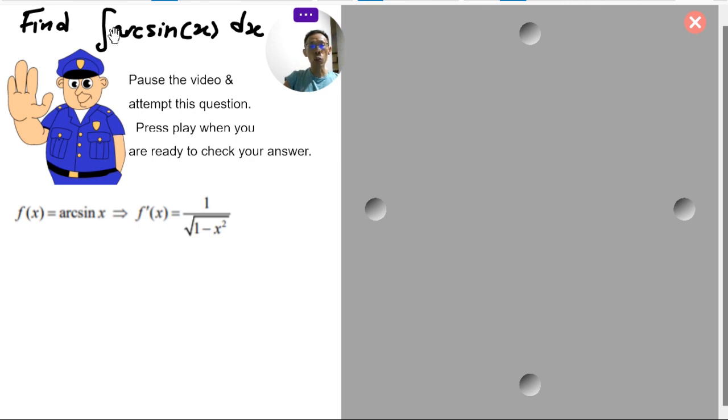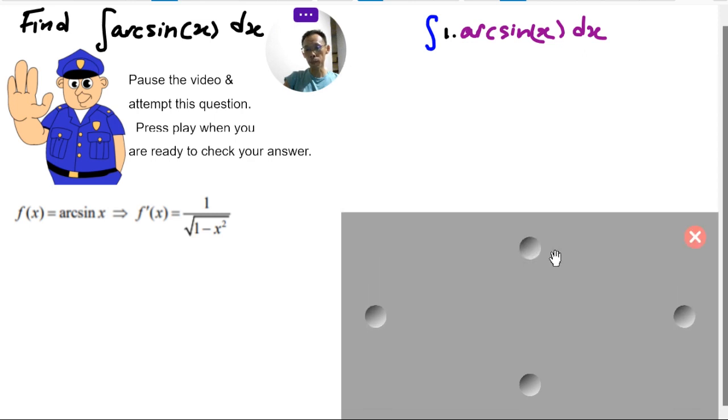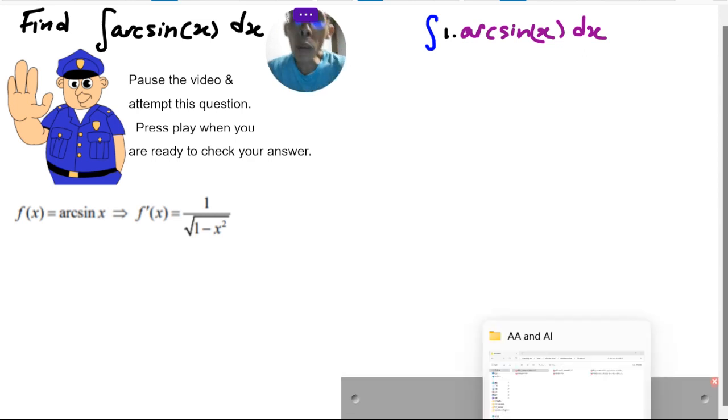In your formula booklet, you will find that you do not have the integration of arcsin x dx written there, but you do have this one on page 12, for example, that the derivative of arcsin x is 1 over square root of 1 minus x square. That means, in this case, I need to add 1 here. So this particular process will go this way.